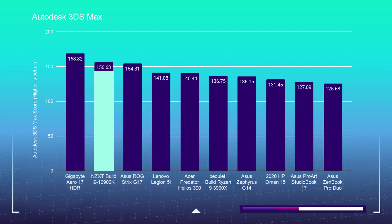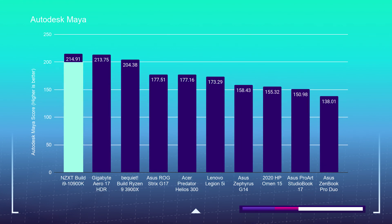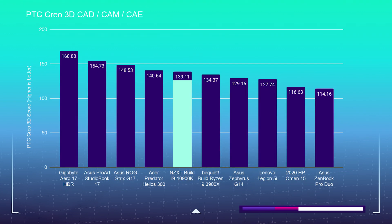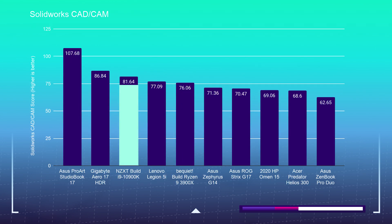Let's take a look at some 3D modeling benchmarks to see how well the 10900K stacks up. For Autodesk 3DS Max, it scored 156.63. For Autodesk Maya, a 214.91. For PTC Creo, a 139.11. And for SolidWorks, an 81.64. It basically tops the charts on almost every single 3D modeling benchmark, so if you're looking for 3D modeling, the 10900K is a great choice.